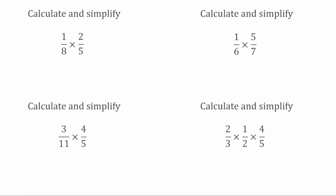For this next question we've got 1 over 8 multiplied by 2 over 5. Again we've got to calculate and simplify, so we're going to see if we can cross-cancel any of these numbers. First looking at the 1 and 5, the highest common factor is 1, so we can't cancel these down. However, looking the other way, we've now got 2 and 8. The highest common factor of 2 and 8 is actually 2. So we're going to divide both those numbers by 2. 2 divided by 2 gives us 1, and 8 divided by 2 gives us 4. So now we've simplified, all we need to do is multiply across. We've got 1 times 1 which is 1, and 4 times 5 which is 20. So that one there would be 1 over 20.